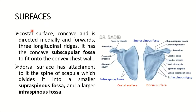Surfaces — first of all, the first of three surfaces is the costal surface. It is concave, directed medially and forwards. There are three longitudinal ridges on this costal surface. It has the concave subscapular fossa — this whole area is the subscapular fossa.